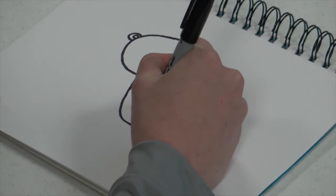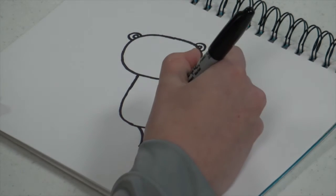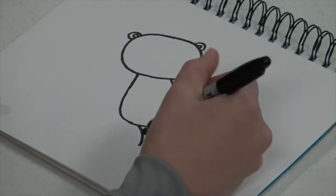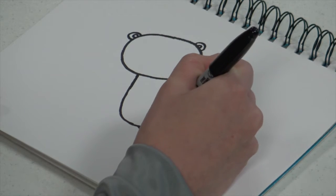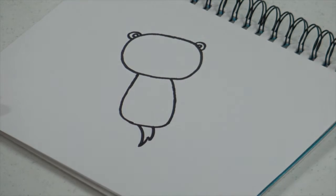Now we're gonna add a tail on the bottom. So make a curved line and then make another curved line but I like to add a little flip to make it look like it has hair on the tail.